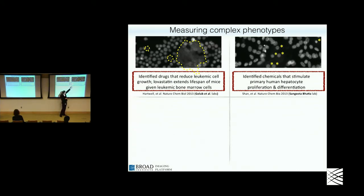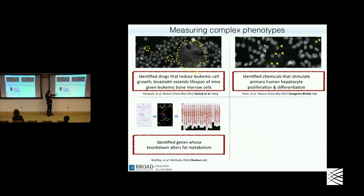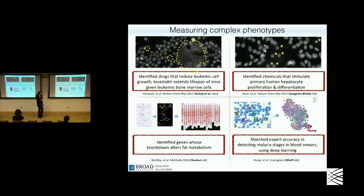In a second experiment with Sangeeta Bhatia's group, she was looking to identify hepatocytes versus fibroblasts, with the goal of finding compounds that cause hepatocytes to proliferate. Recognizing the difference between those two cell types requires a combination of features, not just a single one. Another worm project looked for genes that, when perturbed, alter fat metabolism of the entire organism — looking at the distribution of fat, how much was in the gut versus other parts. And a deep learning project involves identifying malaria stages of infection in blood smears.